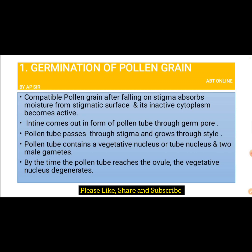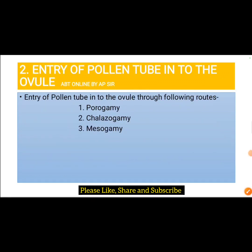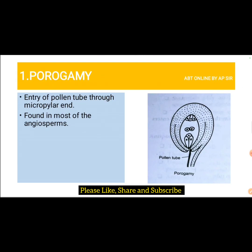The second step is the entry of pollen tube into the ovule. There are three main routes through which the pollen tube enters the ovule: porogamy, chalazogamy, and mesogamy. In porogamy, the pollen tube enters the ovule through the micropylar end, and this is the characteristic feature of most angiosperms.